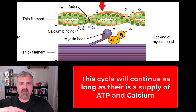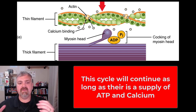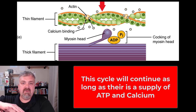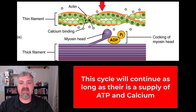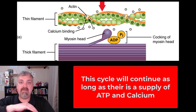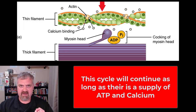Each myosin head can only pull actin so far, so for contraction to keep happening it needs to detach using ATP, then re-cock and grab actin again — that process also requires ATP. As you can see, you need a constant supply of ATP for myosin to grab onto actin, perform the power stroke, pull it toward the center, and then detach. You also need a constant supply of calcium.